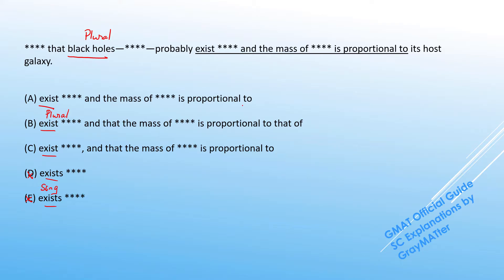Now another difference that we can see at the end of the answer choices is a split between proportional to and proportional to that of. So we have a mathematical construction at play. We just need to check what is proportional to what. We can notice the common factor in these three choices is the mass. So logically, what can the mass be proportional to?